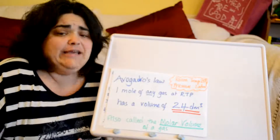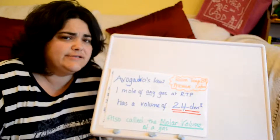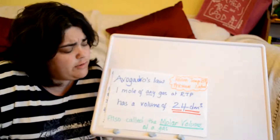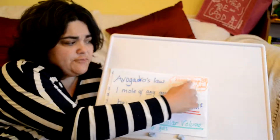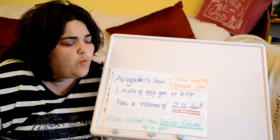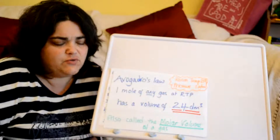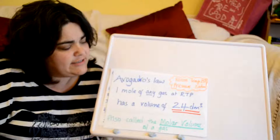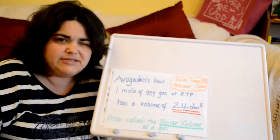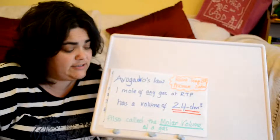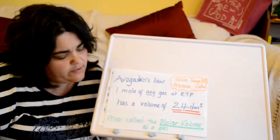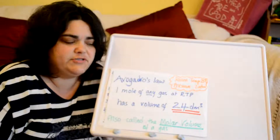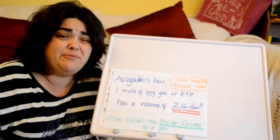Avogadro's law says that one mole of any gas — and for our purposes at GCSE it's the same for all gases — at RTP (room temperature and pressure: 25 degrees centigrade, one atmosphere) has a volume of 24 decimetres cubed, effectively 24 litres. This is the same for every gas and it's also called the molar volume of a gas.